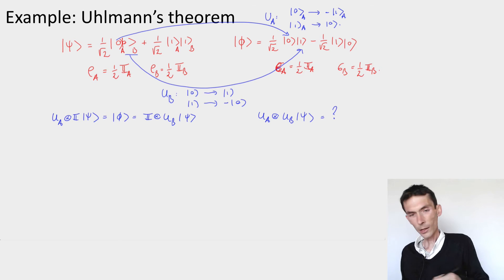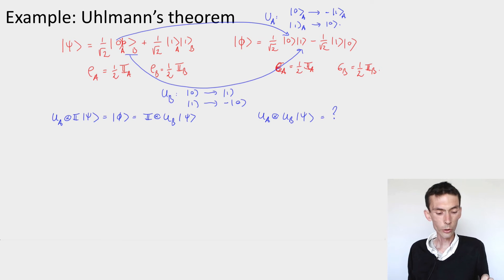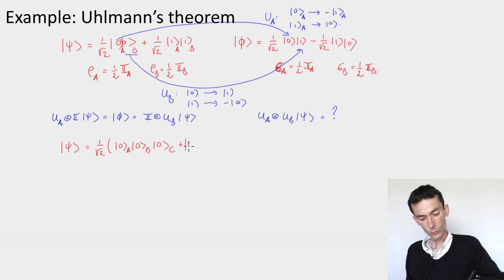Let's see another example now. The second example is one where things are not going to go so well. Let's try to apply Uhlmann's theorem in the case where we have a tripartite system. So let's consider a state psi, which would be 1 by root 2, 0 on A, 0 on B, and let's have a C system now, 0 on C, plus 1 on A, 1 on B, and 1 on C.